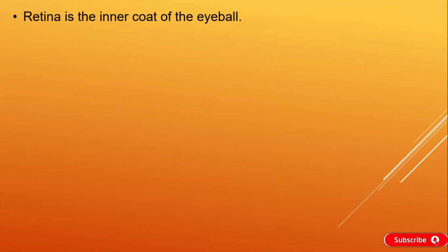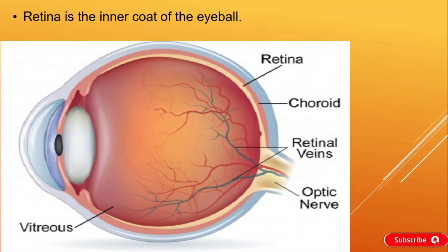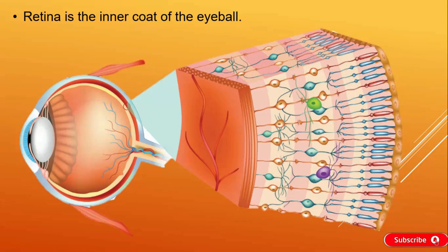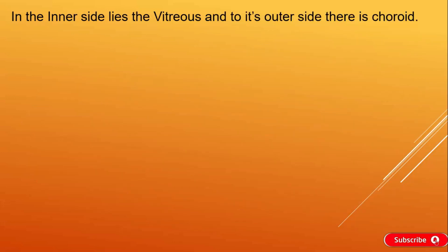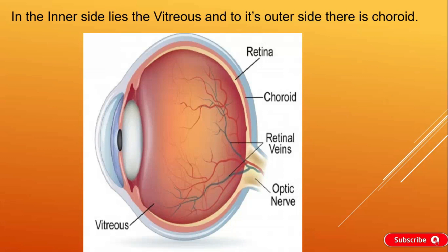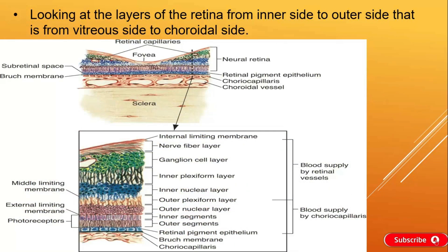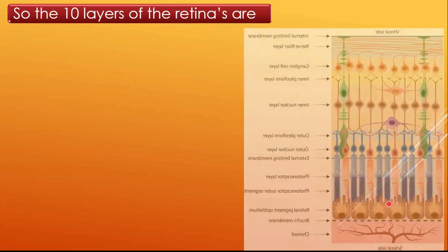Retina is the inner coat of the eyeball. To its inner side lies the vitreous and on its outer side there is a choroid. If we are looking at the layers of the retina from inner side to outer side — that is from vitreous side to choroidal side — the 10 layers of the retina are as follows.